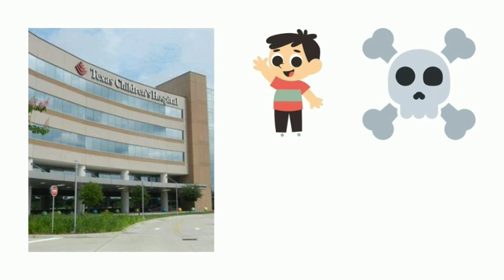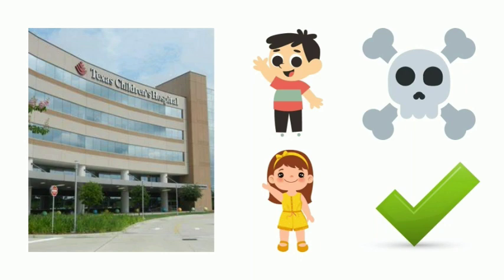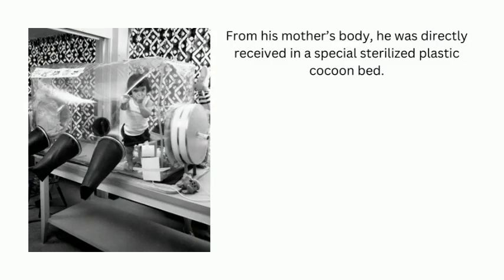David was kept admitted for a long time at Texas Children's Hospital in Houston, Texas, after his birth. Much before David was born, his parents had already lost their first son to SCID and were cautioned by doctors that if they had any future male progeny, the chances of him inheriting the disease would be really high. The couple still dared to have another baby, who managed to survive as it was a daughter.